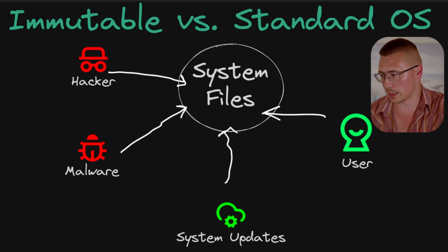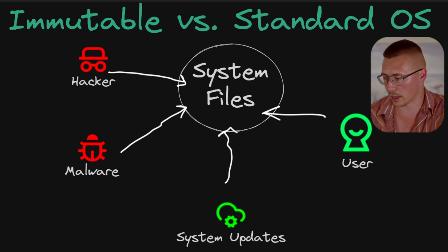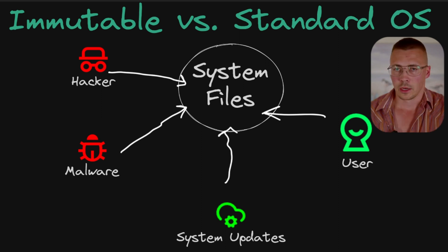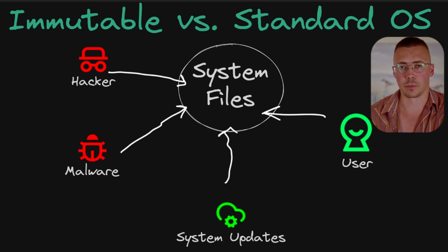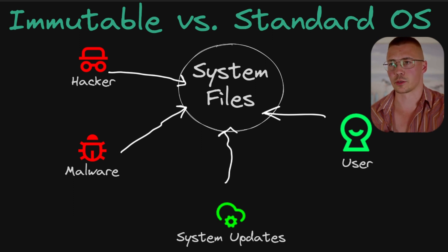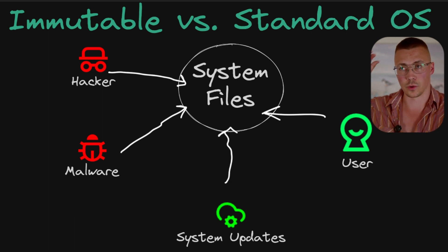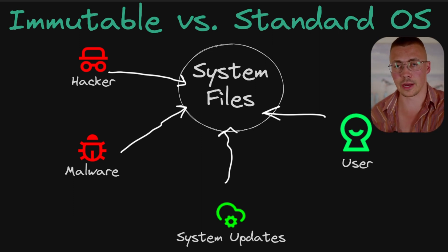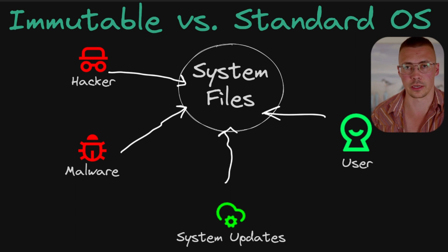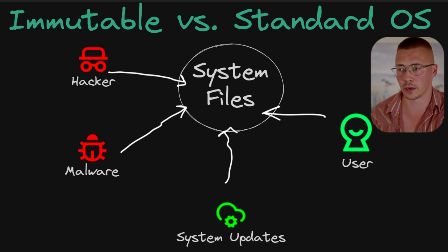A hacker can get in there, malware can get in there and change stuff. You've got system updates which, the way they work on Windows, gets pretty sloppy after a while. And then users can go in there too. So let me give you an analogy of how immutable operating systems work as opposed to standard operating systems, and then we'll start getting into the technical details.